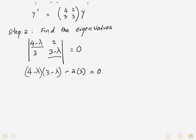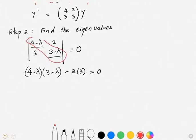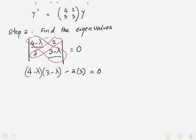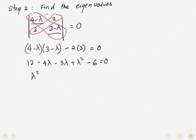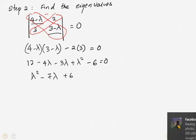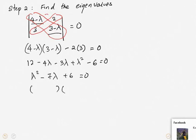Expanding: 12 minus 4λ minus 3λ plus λ² minus 6 equal to 0. Simplifying, you get λ² minus 7λ plus 6 equal to 0, which factors as (λ-6)(λ-1) equal to 0. So the eigenvalues are λ equal to 6 and λ equal to 1.